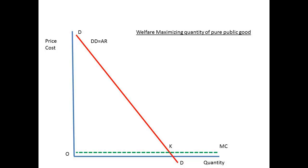We can show this using a graph. The dotted line represents the marginal cost of supplying the good, which is along the zero line of the horizontal axis. The price remains at zero regardless of the quantity. This marginal cost line, MC, intersects with the demand curve at point K. We say this is a point of Pareto optimality. Zero K units of the good are produced at zero price.